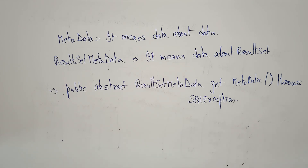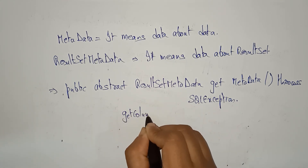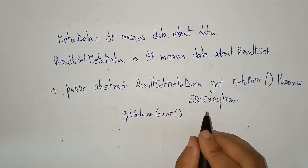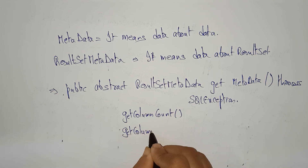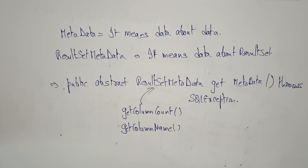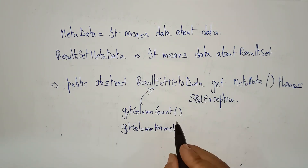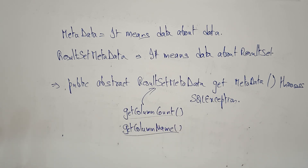In ResultSetMetaData, the methods we use are getColumnCount() — which returns the number of columns — and getColumnName() — which returns the column name at a specified column number. Using all these methods together, we will write a program to retrieve data from the database.